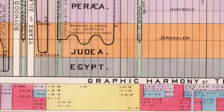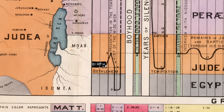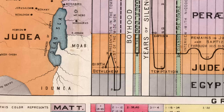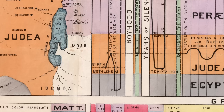The first event is, of course, Jesus's birth. That occurs in Bethlehem, which is in Judea just south of Jerusalem, so that's why the timeline starts in the orange section. However, after the wise men visit, the family escapes to Egypt, which is why the line dips down to this gray section.